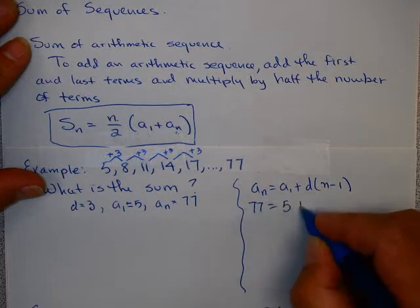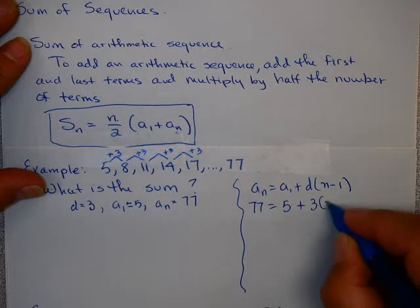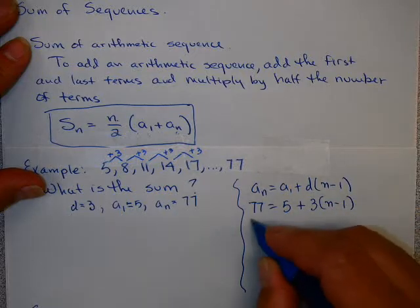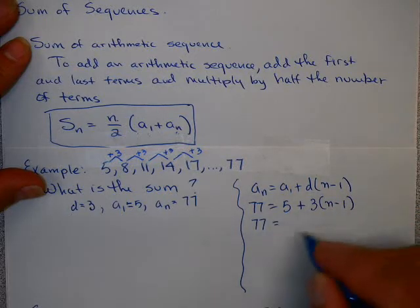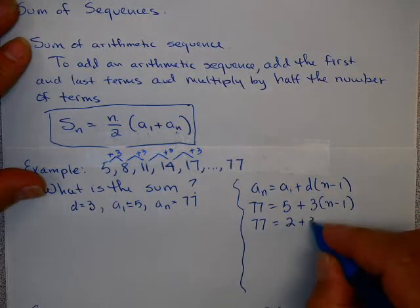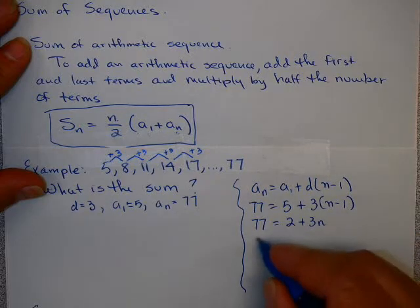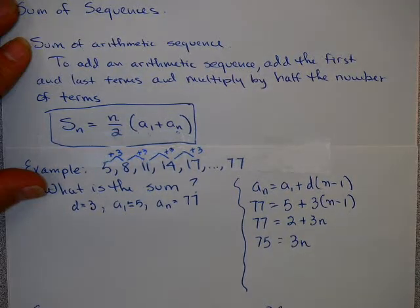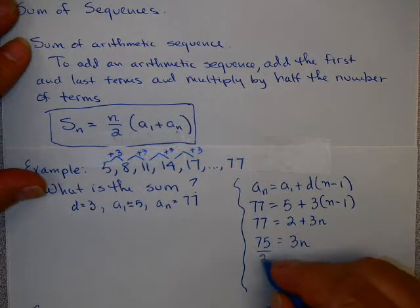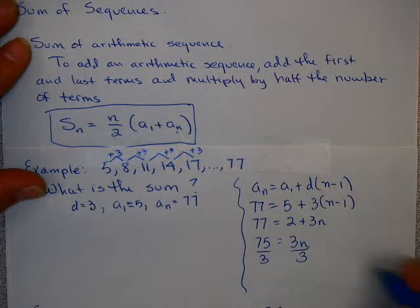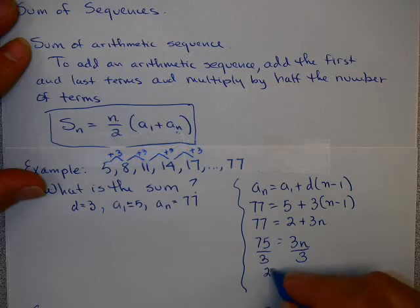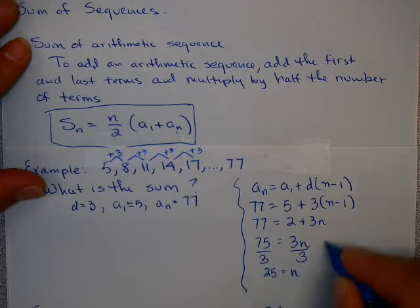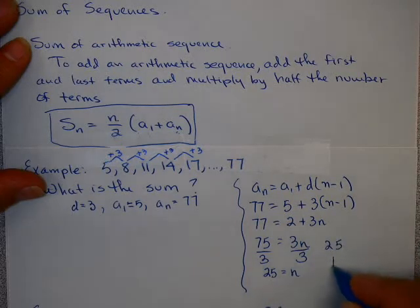I know my nth term is 77. My first term is 5. I know my common difference is 3. So I get 77 equals 2 plus 3n. Subtracting 2, that gives me 75 equals 3n. So n is equal to 75 divided by 3, which is 25. There are 25 terms in this sequence.